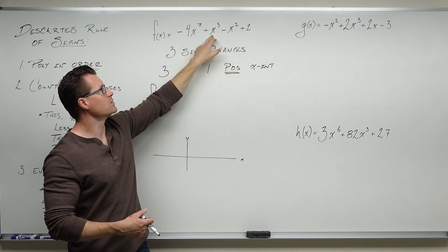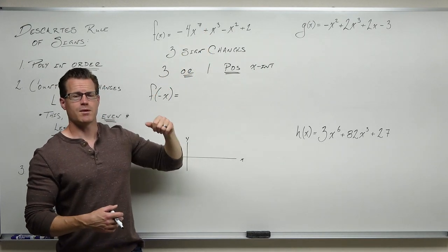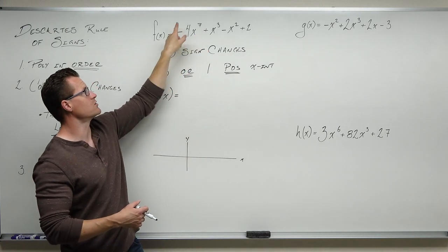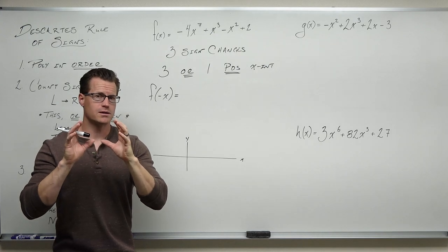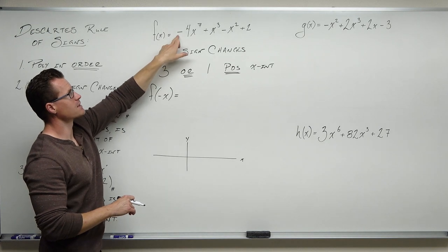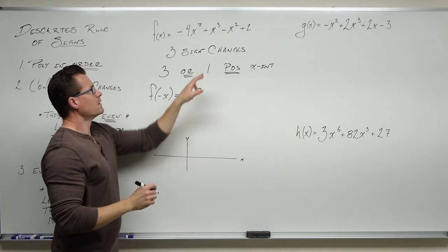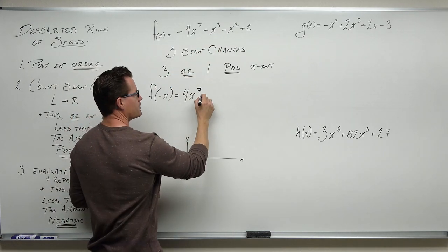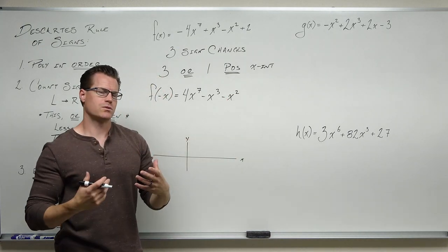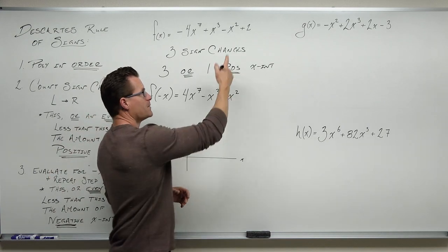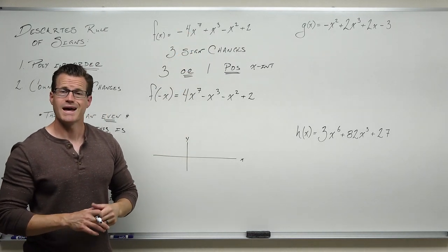For odds, when you plug in a negative, it will change the sign. If I plug in negative x to x cubed, it gives me negative x cubed and changes that sign. If I plug in negative x to x to the seventh, it gives me negative x to the seventh. So to evaluate easily, just change your odd powered terms — not your even, not your constants. Change the sign in front of them. So evaluating f of negative x: the x to the seventh term becomes positive 4x to the seventh. This is an odd powered term, I change it to minus x cubed. I won't change the even power term, and I don't change my constant.